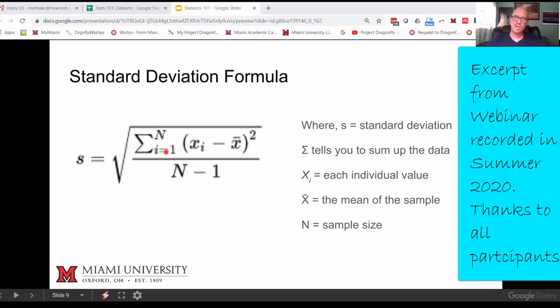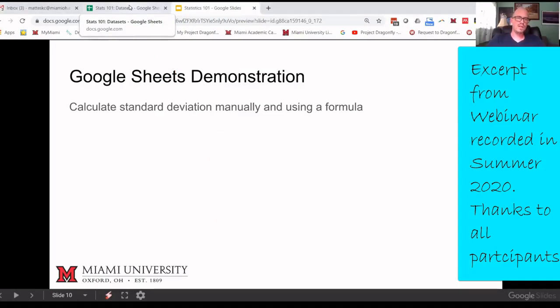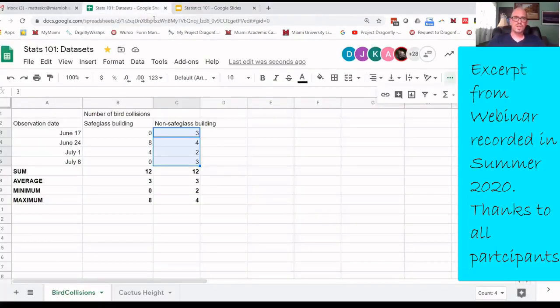This little X sub i is saying each individual value and then X with this line on it with the bar on top is the mean of the sample. So we are going to take all the individual samples and subtract the mean from them. We're going to square that. We're going to sum it after squaring it. And then we're going to divide by N minus 1, which is the sample size, and then take the square root. Why do we do all that?